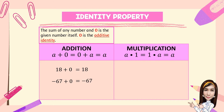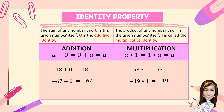For multiplication: A times 1 is equal to 1 times A, and that is equal to A. For example, 53 times 1 is 53, and negative 19 times 1 is equal to negative 19. The product of any number and 1 is the number itself. 1 is called the multiplicative identity — any number multiplied by 1 gives the number itself.